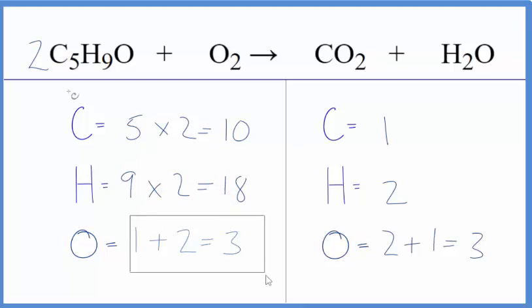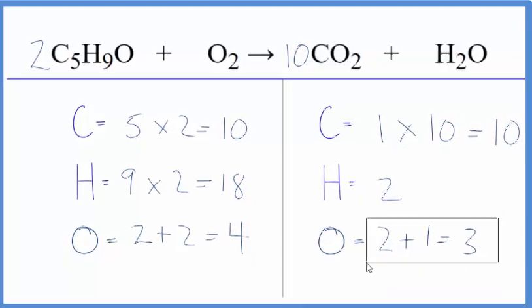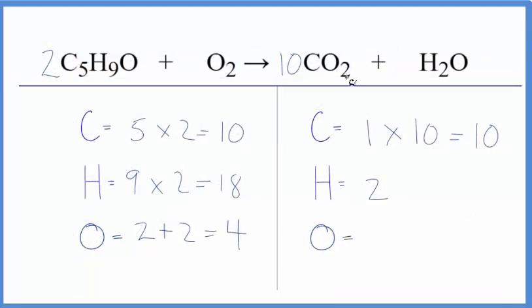For the oxygens I have the two times the one here plus the two in the oxygen, so I have four. I feel a little bit better about this now because I could put a ten in front of the CO2. One times ten, the carbons are balanced.